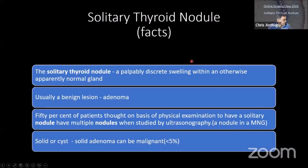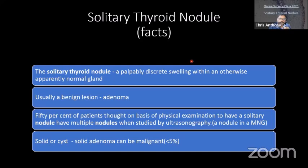In summary, a thyroid nodule is a palpably discrete swelling within an otherwise normal thyroid gland. It is important because although it is usually benign, a small percentage — less than 5% — can be malignant. You are going all out to identify these malignant patients using all risk factors and, most importantly, FNAC under ultrasound guidance.